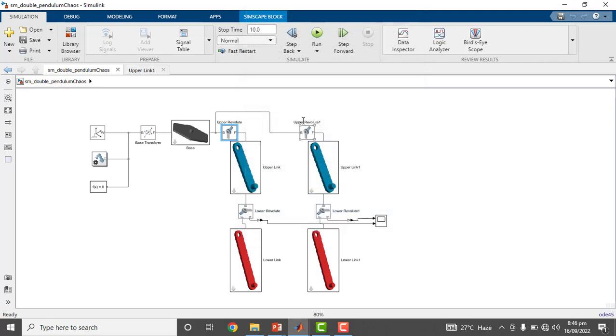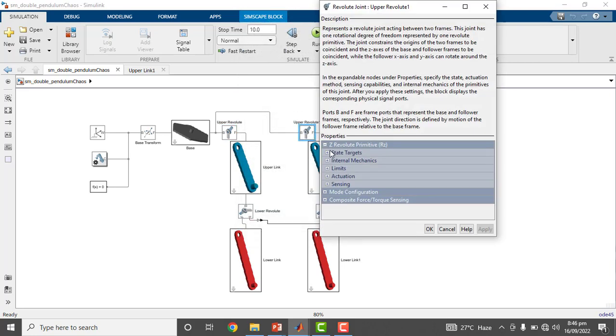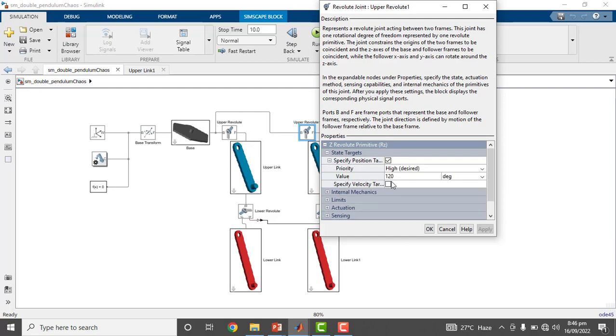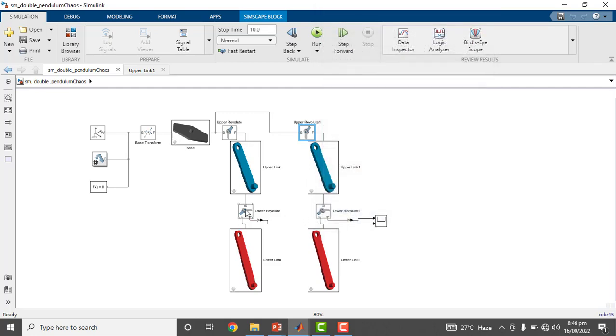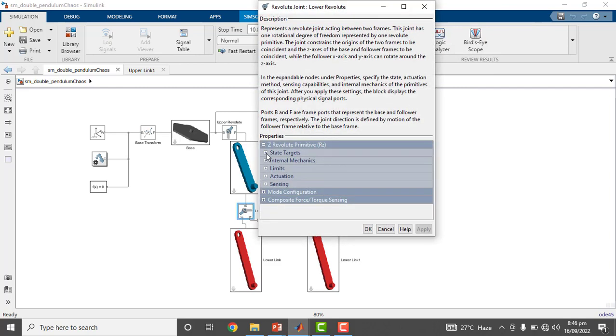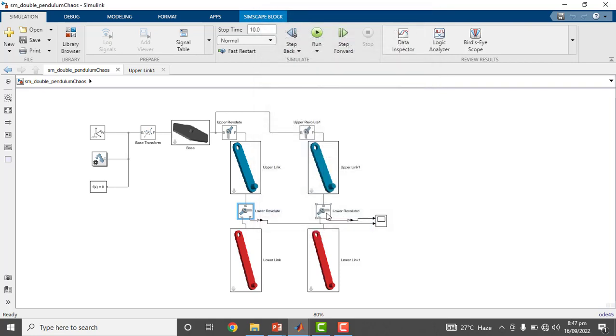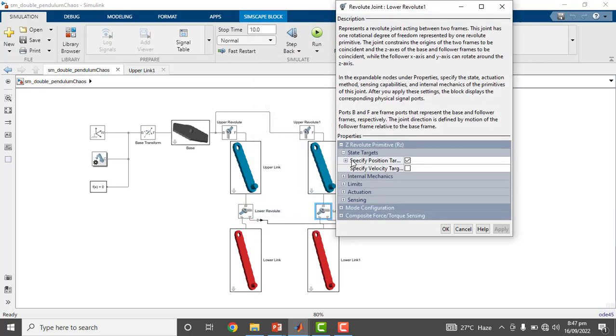And that of the second pendulum, this is also 120 degrees. And the angular position of the second links, for first this 45 degrees and for the second pendulum it was 46 degrees.